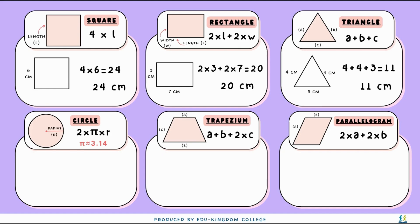Whereas for the circle, we're trying to work out the perimeter, also known as the circumference. It has a radius of 5 centimeters, so we do 2 times pi, which is 3.14, times 5, which gives us 31.4 centimeters as the perimeter.